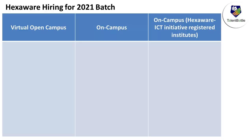Hexaware hiring for the 2021 batch happens in three particular models. First is the open virtual campus drive, for which most students have applied and got a reply form on firstnockery.com. Next is the on-campus process, which Hexaware has already started for a very few select colleges. Third is the Hexaware and ICT Academy initiative for students whose colleges are registered under that program.